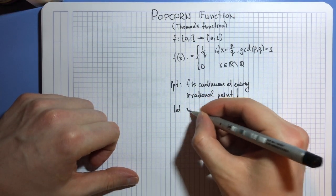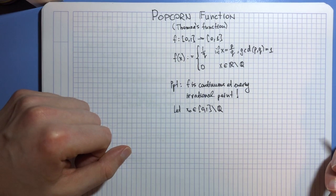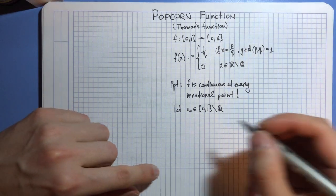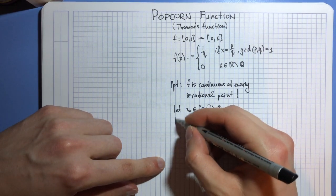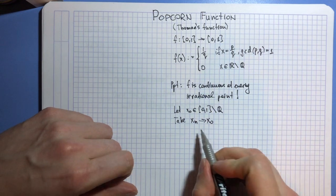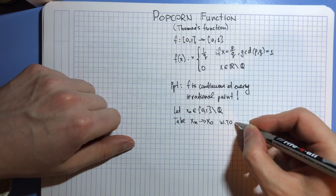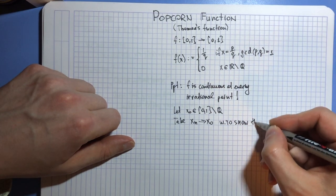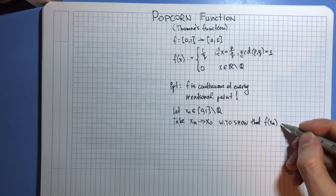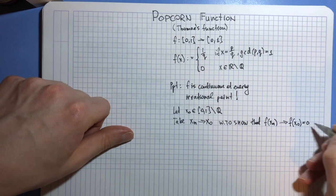Let x₀ be an irrational point inside our unit interval, and I will be using a sequential definition of continuity. What we want to do is take a sequence xₙ that tends to x₀ where each xₙ belongs to our set, and we want to show that the functional value evaluated at these points will also tend to functional value at x₀, which is by definition zero.